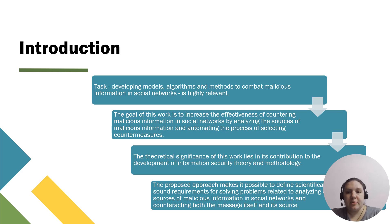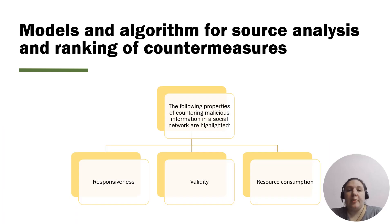This study focuses on developing models and algorithms to combat malicious information in social networks, aiming to enhance effectiveness in countering such threats. Its theoretical significance lies in advancing information security methodology, while its practical application involves integrating developed tools into a decision support system for operators countering malicious content. Based on the conducted research, a set of functional and non-functional properties of countermeasurement assessment and malicious information in social networks were identified, along with requirements for countermeasurement methodology and identification.